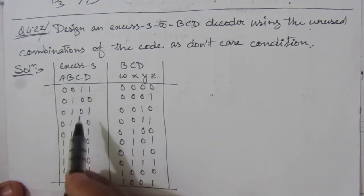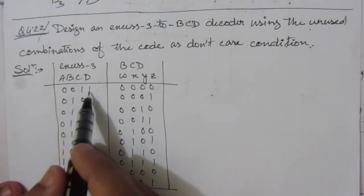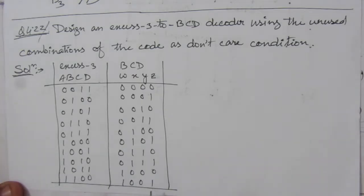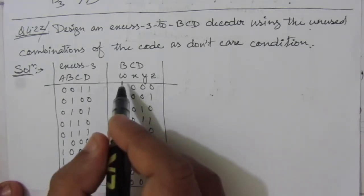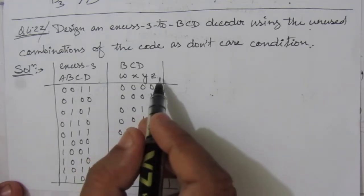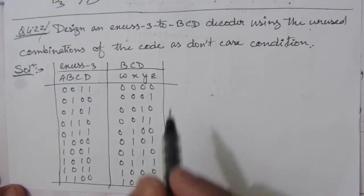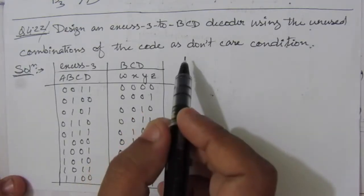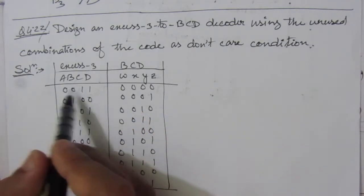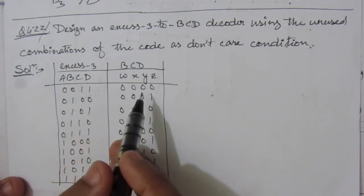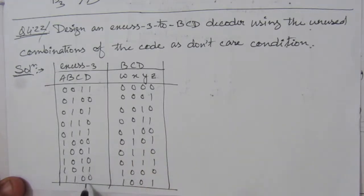The XS3 number ranges from 3 to 12, while the BCD number ranges from 0 to 9. We need to find the expressions for W, X, Y, and Z to convert the XS3 number to BCD code. Since we start from 3 and end at 12, the values 0, 1, and 2 will be don't care conditions, and values 13, 14, and 15 will also be don't care conditions.